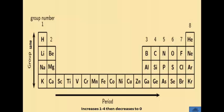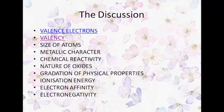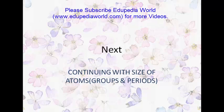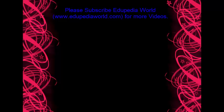This covers the basics of valency. To calculate the valency of a compound, you need to know the valencies of its elements with respect to groups and periods in the modern periodic table. In the next session, we will learn about the size of atoms and how it contributes to the classification of elements with respect to groups and periods. Thanks for watching EdupediaWorld videos.